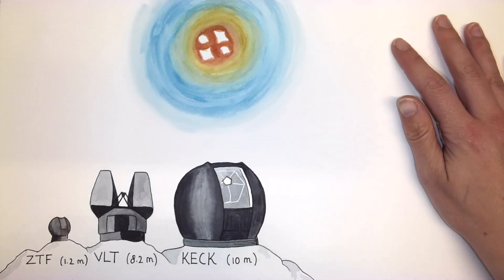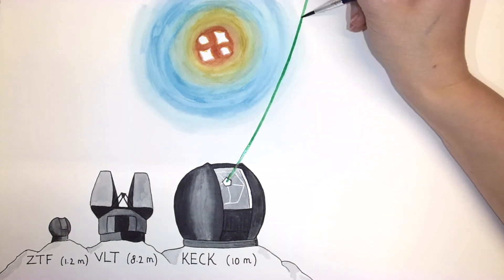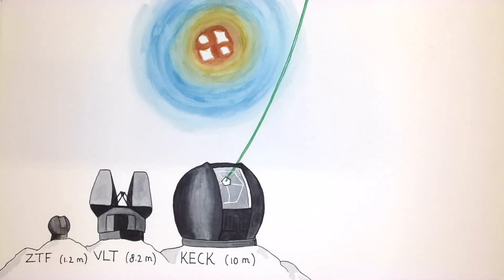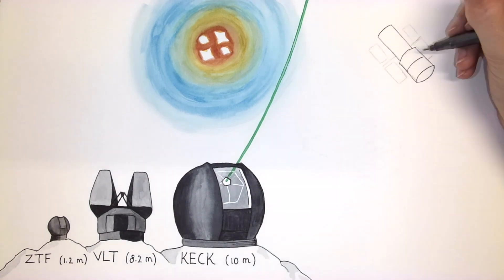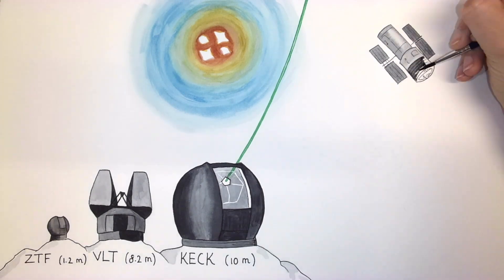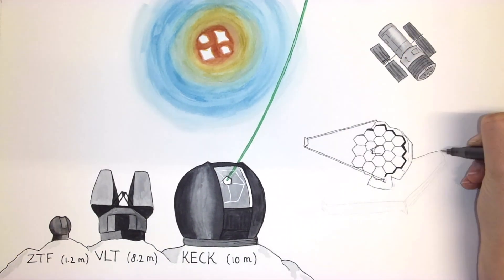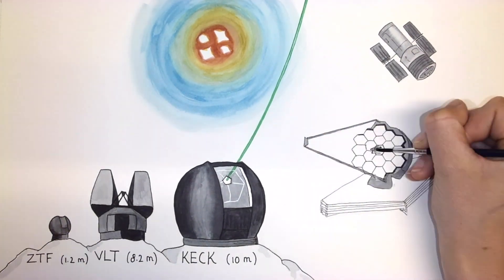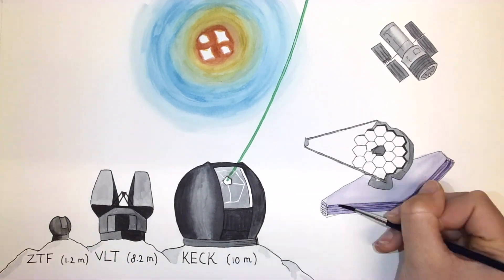Adaptive optics corrects atmospheric distortions using a laser, providing us with an exceptionally sharp view from Earth. Supernova Zwicky was also observed from space with the Hubble Space Telescope. And observations of Zwicky's afterglow, the nebular phase, are scheduled with the newly launched JWST.